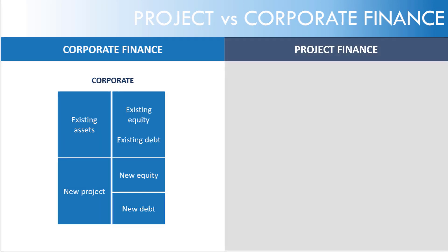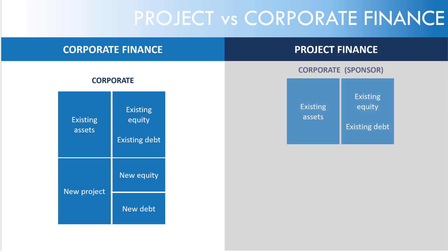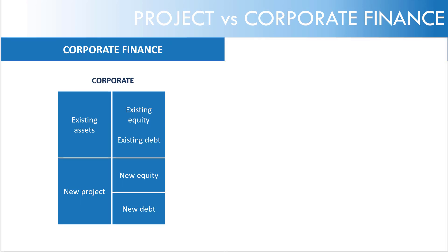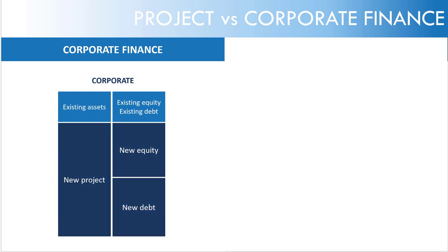As opposed to Project Finance, where there is separation between the existing company and the new project. The assets of the project, or SPV, are ring-fenced, and there's no recourse to the existing assets. Let's look at where Project Finance is advantageous. What happens if the project is large compared to the company's size? Any failure would contaminate the existing company, putting it at risk. So a key advantage is that a Project Finance structure protects the existing assets.